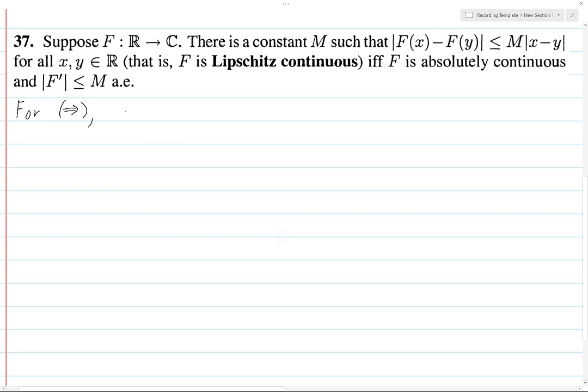So for this, suppose that there exists an M such that |F(x) - F(y)| ≤ M|x - y| for all x and y in R.